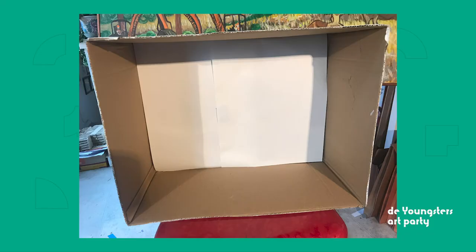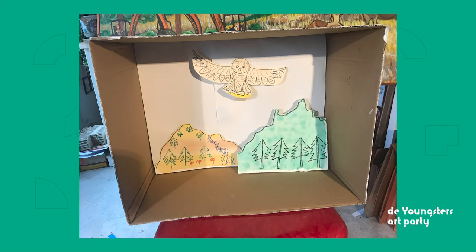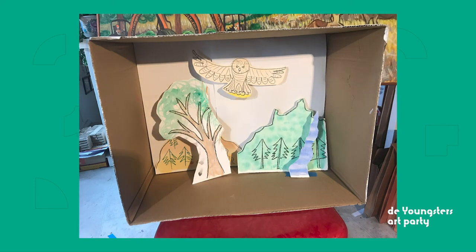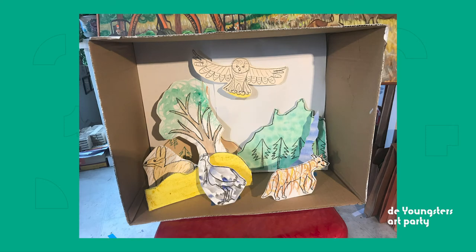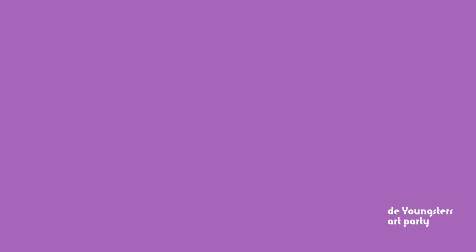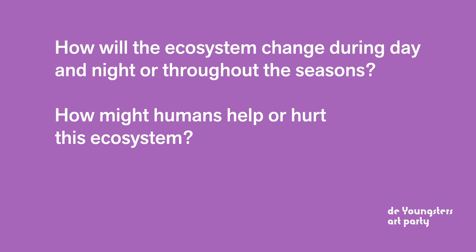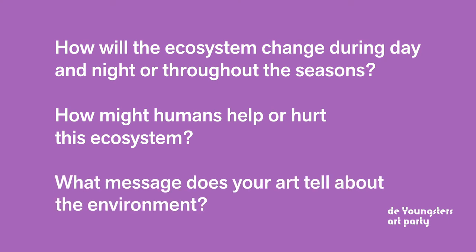Now, you can place the different parts of your ecosystem inside your box. Use your imagination to create stories about your landscape and the animals that live there. How will your ecosystem change during the day or night or throughout the seasons? How might humans help or hurt this ecosystem? What message does your art tell about the environment?